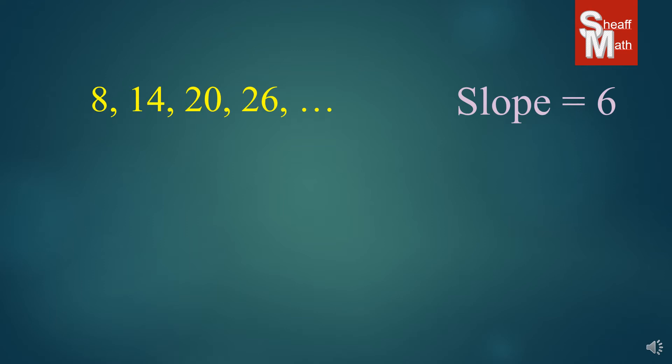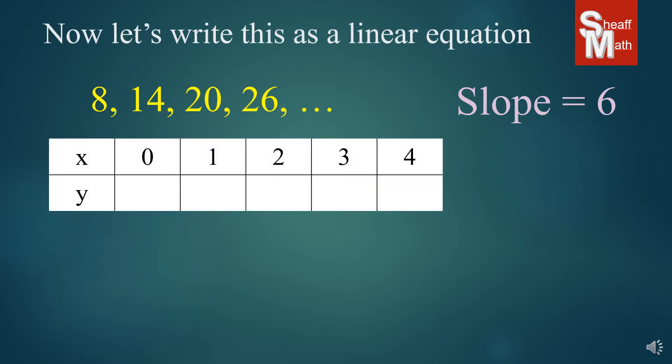So, we have our slope. And what I'm going to have you do every time is you're going to make an XY table. And this XY table is going to be 0, 1, 2, 3, 4. The X represents the term in the sequence. And the Y represents the actual number of that term. And so, if you notice, I put 8 under the first term, under 1, 14 under 2, 20 under 3, and so on.